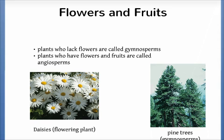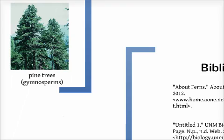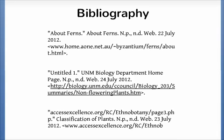An example of a gymnosperm would be a pine tree — it has vascular tissue and seeds, however it does not have flowers or fruits. An example of an angiosperm would be any flowering plant, such as a daisy. Thanks for watching.